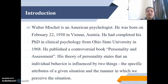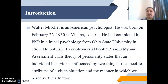Walter Mischel is an American psychologist. He was born on February 22, 1930 in Vienna, Austria. He completed his PhD in clinical psychology from Ohio State University in 1968. He published a controversial book, Personality and Assessment. His theory of personality states that an individual's behavior is influenced by two things: the specific attributes of a given situation and the manner in which we perceive the situation.